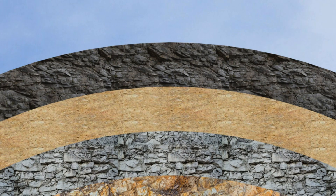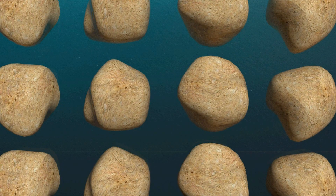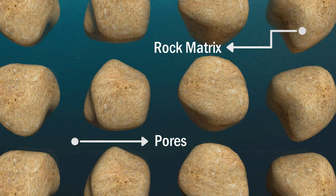To understand the nature of hydrocarbon subsurface storage, we have to first understand the basic structure of rocks. Rocks can be divided into two main parts: the rock matrix and the pores. The rock matrix represents the rock grains, while the pores are the void spaces between these grains. These pores are the storage spaces for the hydrocarbons inside the rock.